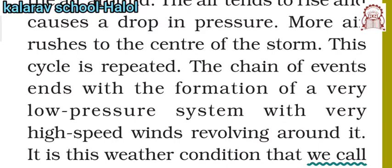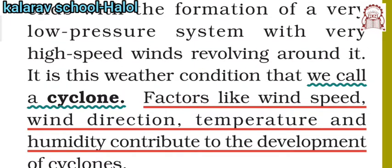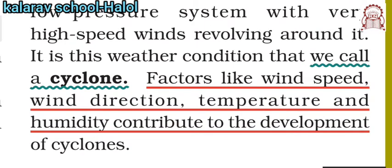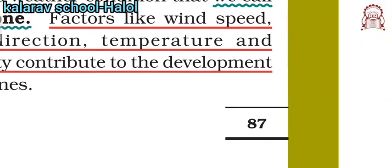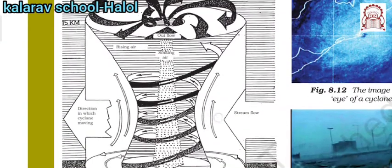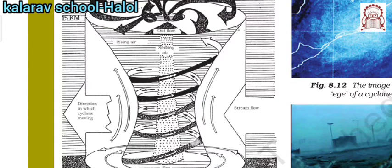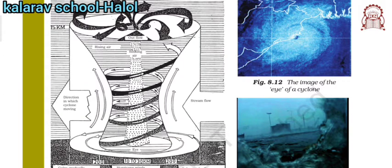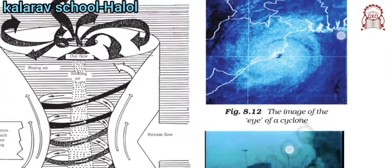This continuously revolving high-speed wind is the condition of a cyclone. A number of factors affect the cyclone: wind speed, wind direction, temperature, and humidity all contribute to its development. You can see in the diagram where air is rising upward, sinking of air takes place, and the center is called the eye of the cyclone.